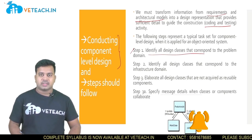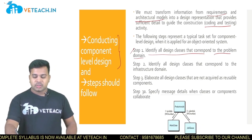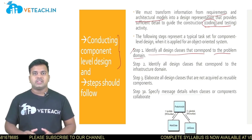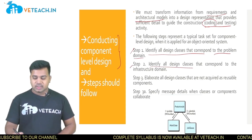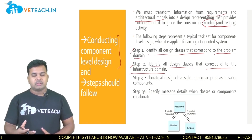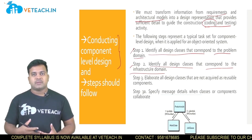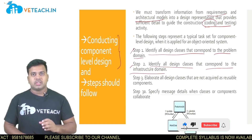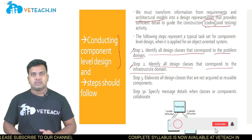We have some steps to follow when designing a component level design. The first step is to identify all design classes that correspond to the problem domain — before going to the coding stage, you identify what requirements and classes you need. The second step is to identify all design classes that correspond to the infrastructure domain, which is external to the software project, such as developers, staff, and infrastructure required for development.